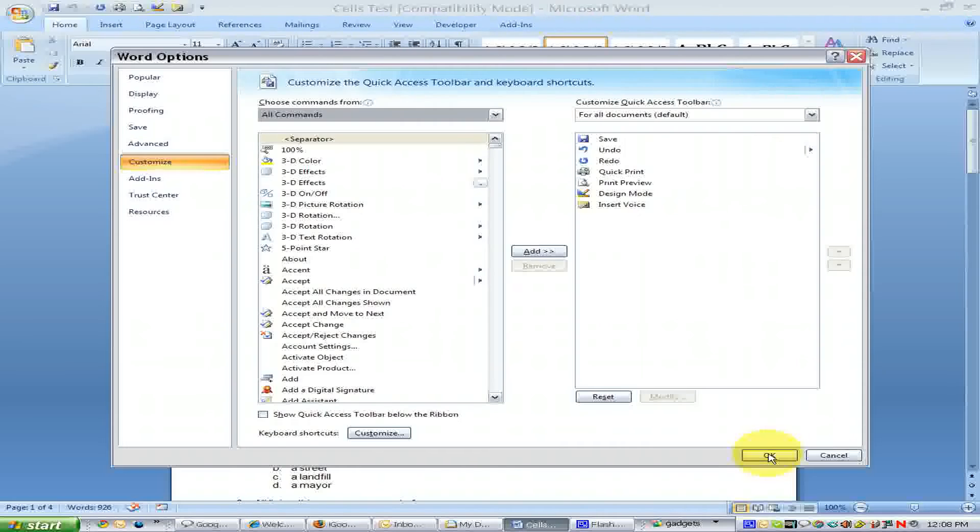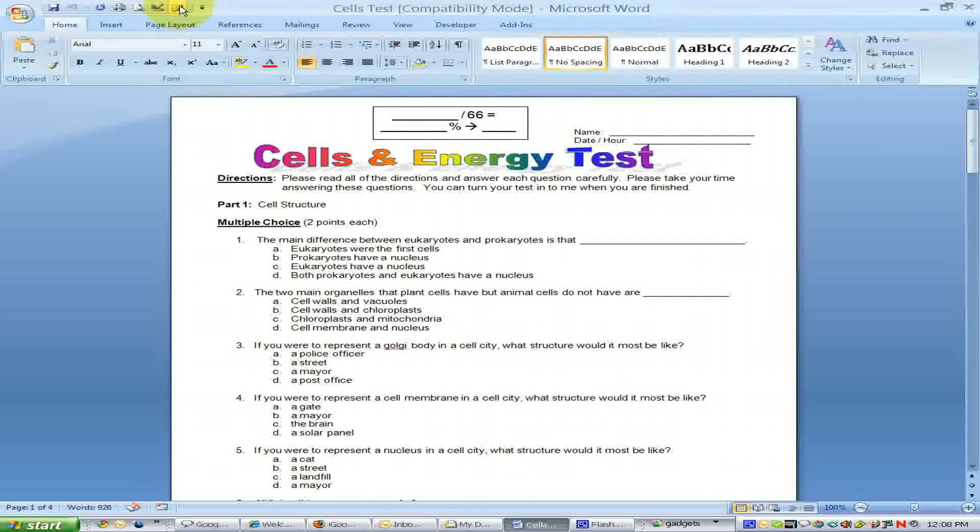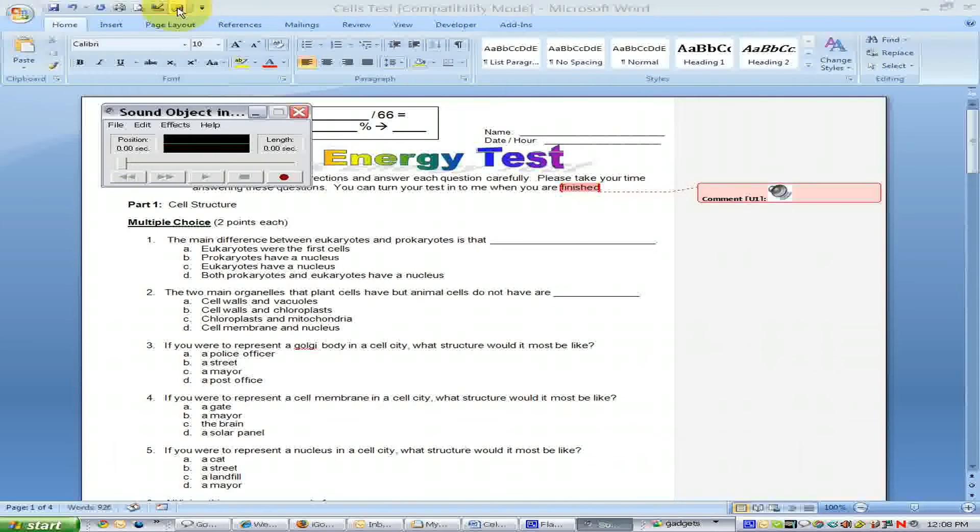Once you've added the Insert Voice shortcut to the top of your Word toolbar, you're going to add your audio notes. For instance, with the directions, I'm going to add an audio note here, so I'll put my cursor at the end of the directions, and I'll click on the Insert Voice Note, and this will pop up a Voice Recording Tool.